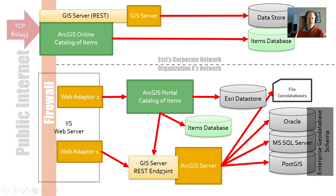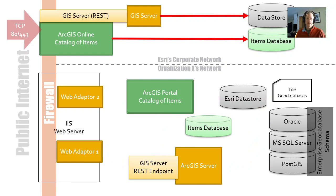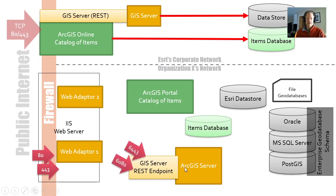ArcGIS Server itself has different types of servers — for example, there's an image server, which is an extra license. You can deploy it bundled on the same server or put it onto a separate server so image processing occurs on a dedicated computer. Now let's talk about ports, because each one of these things you need to access. The first is the web adapter. Coming through a firewall, the only ports open to IIS are port 80 (HTTP) and port 443 (HTTPS). Internally, the GIS server by default uses 6443 and 6080 — reflecting those. Port 6080 is the HTTP port to the GIS server, and 6443 is the HTTPS port.